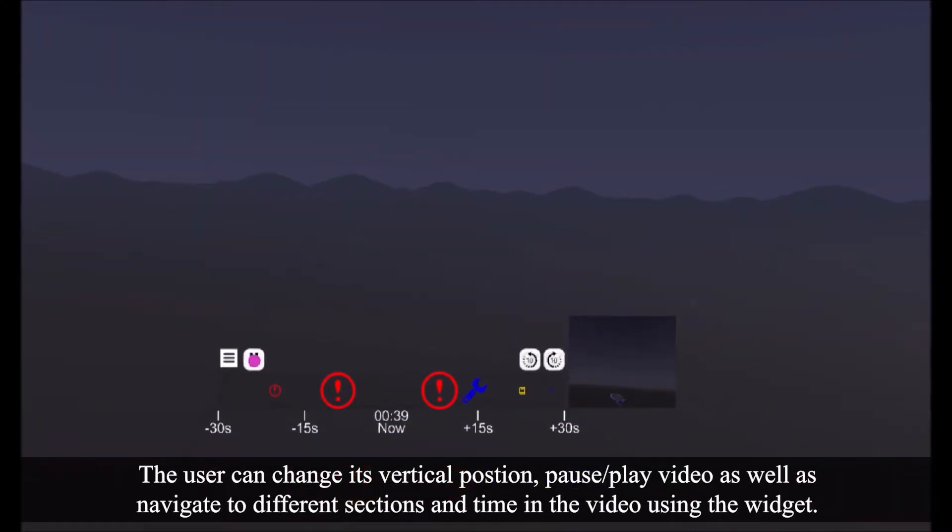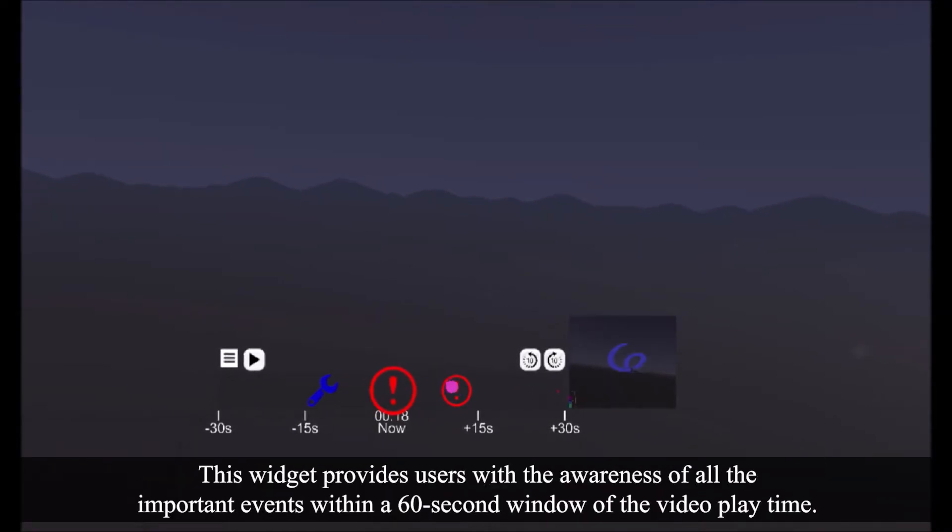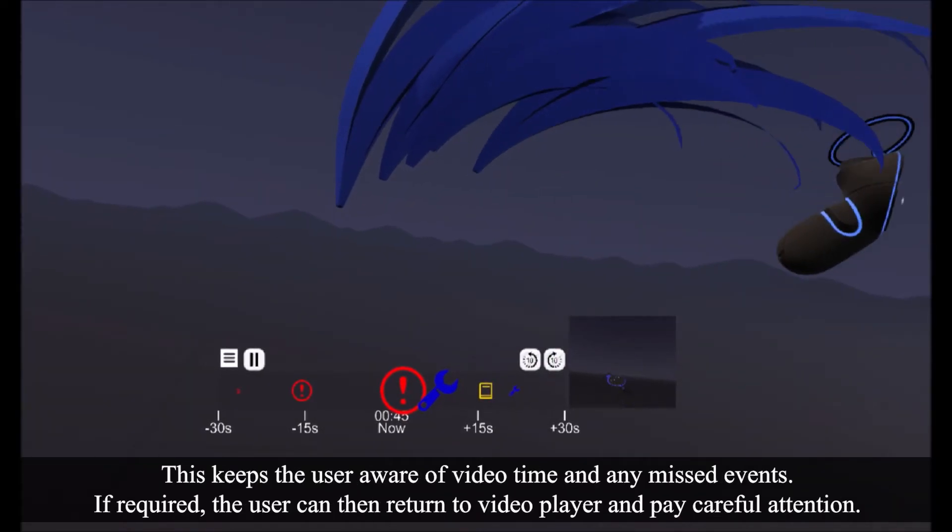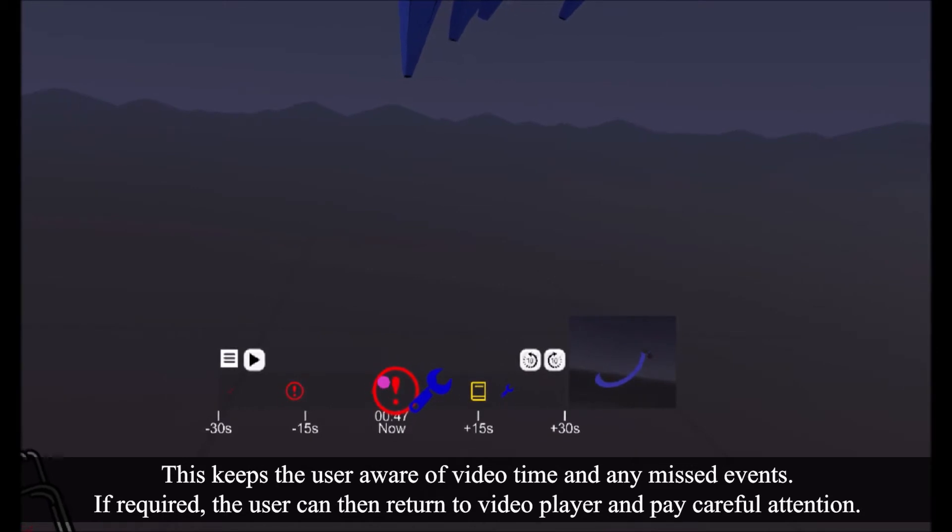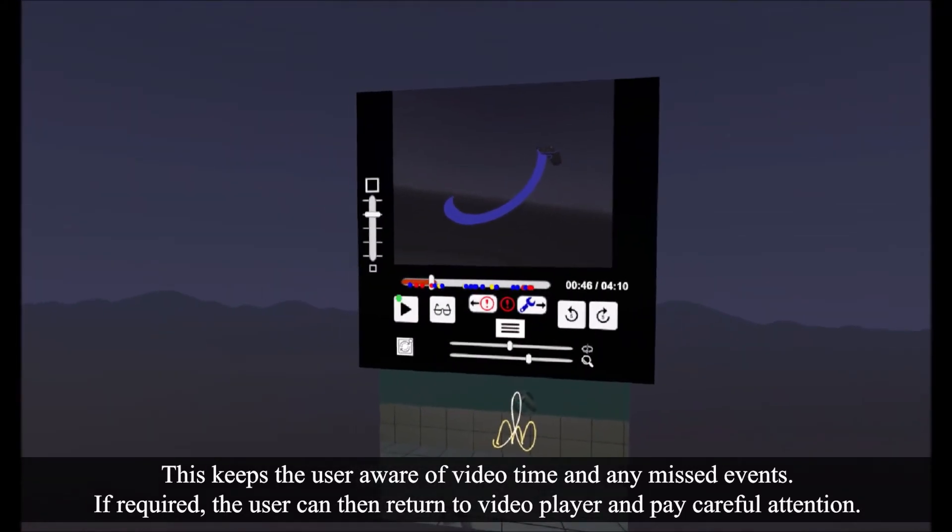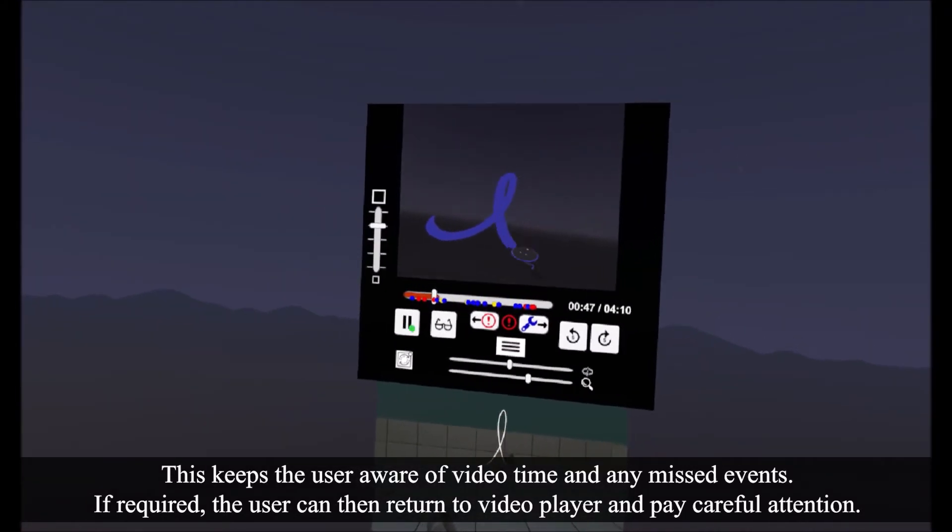The user can change its vertical position, pause or play the video, as well as navigate to different sections and time in the video using the widget. This widget provides users with the awareness of all the important events within a 60-second window of the video playtime. This keeps the user aware of the video time and any missed events. If required, the user can then return to the video player and pay careful attention.